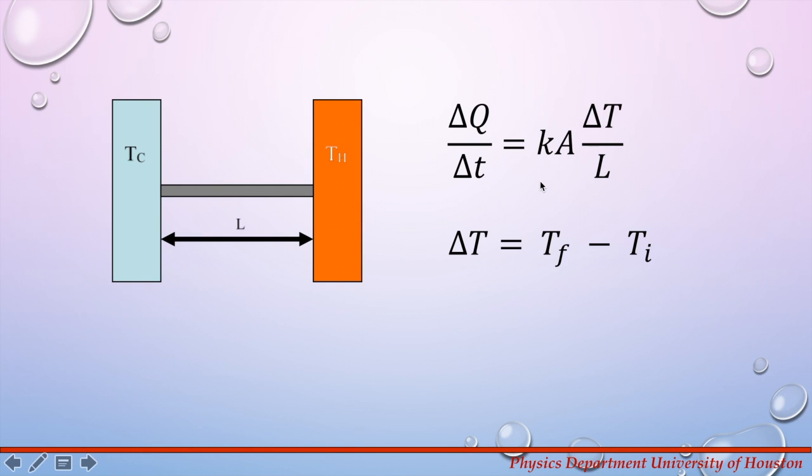Good conductors such as silver or copper have high thermal conductivity constants. For example, wood has a really low conductivity constant because wood is a poor heat conductor.